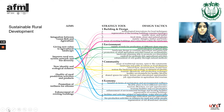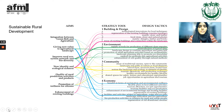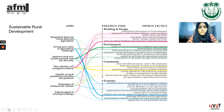The solution to the problem at hand is to use a reverse migration approach through sustainable rural development. The objectives include integration between green areas and agriculture, giving new value to agricultural landscapes, improving rural economic systems, improving the network between ecosystem and biodiversity, and creating new identity and ecological richness.